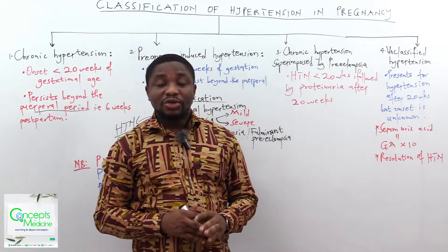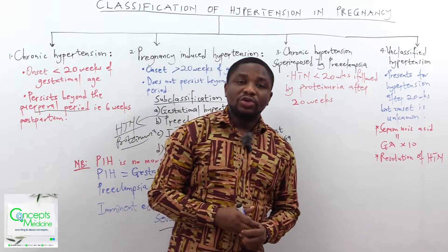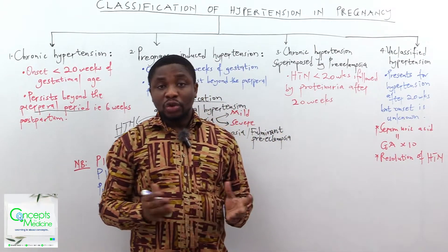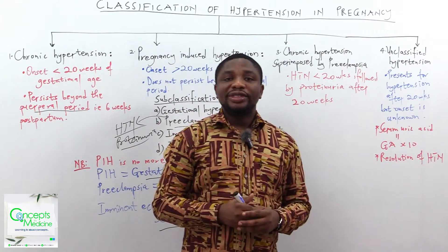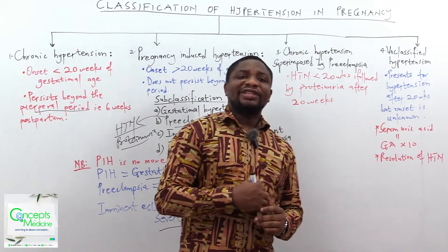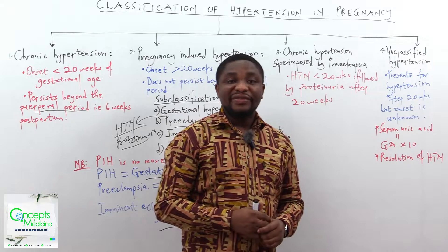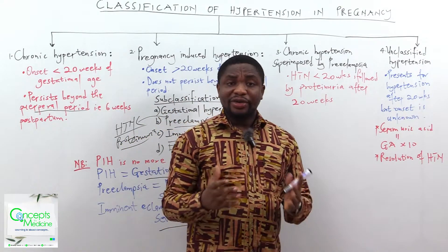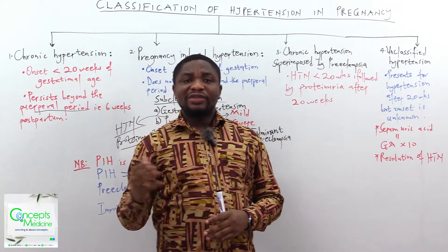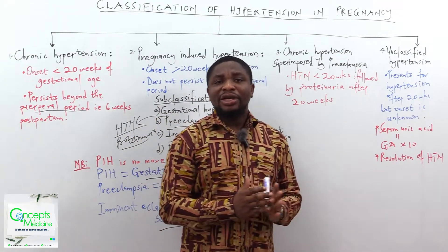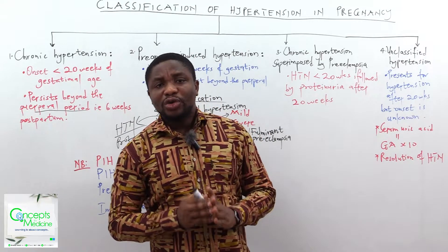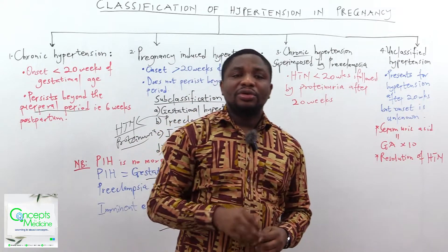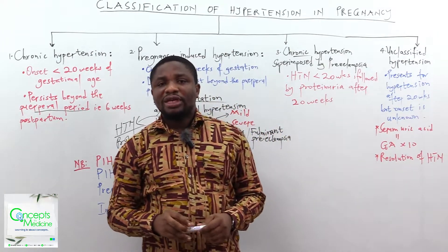Let's move ahead and talk about chronic hypertension superimposed by preeclampsia. In this scenario, the onset of hypertension is known and is less than 20 weeks of gestation. After 20 weeks of gestation, there is evidence of proteinuria, which brings into the picture hypertension with proteinuria — and that gives us preeclampsia. The hypertension occurring in isolation before 20 weeks is called chronic hypertension. That is what we call chronic hypertension superimposed by preeclampsia.